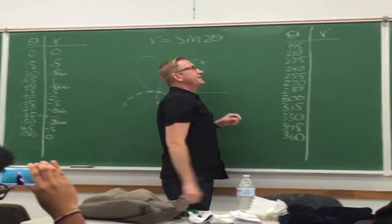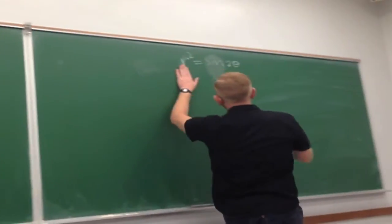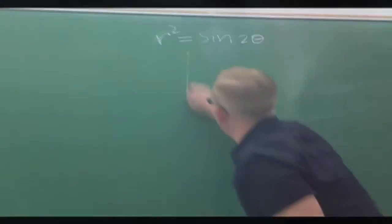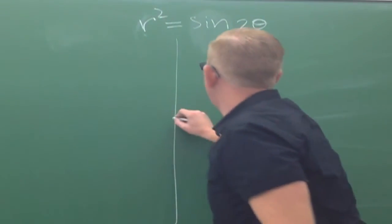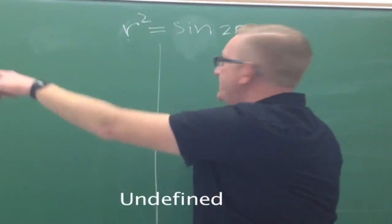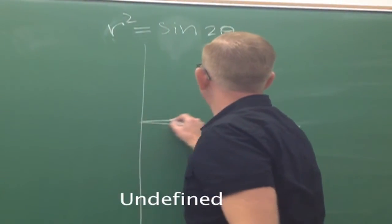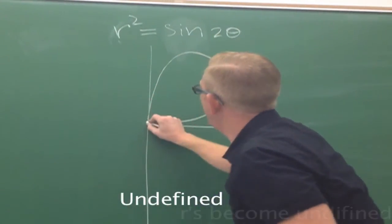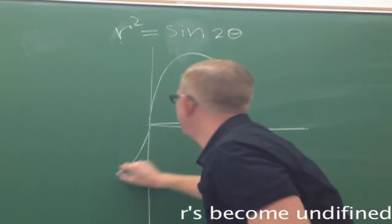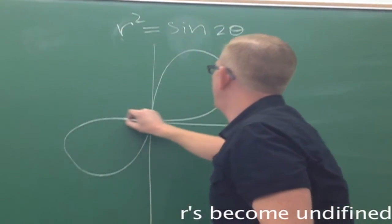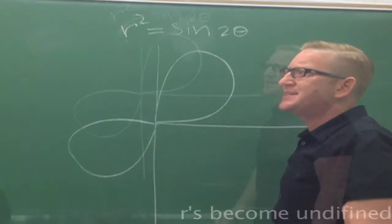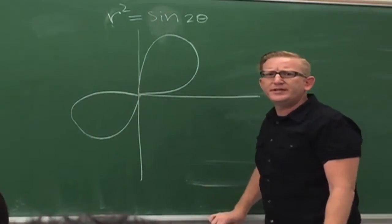I'm trying to talk about what happens when we get rid of our negative r's. We get rid of our negative r's — all our negative r's become positive, so we still start in this direction. Whoa, it was going so negative! And then that's how you only get the two lobes on that.